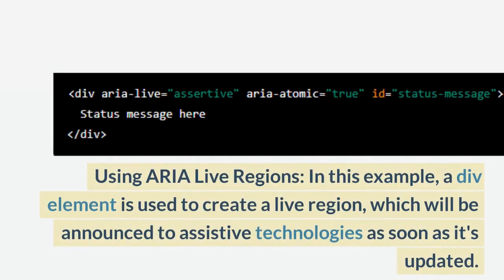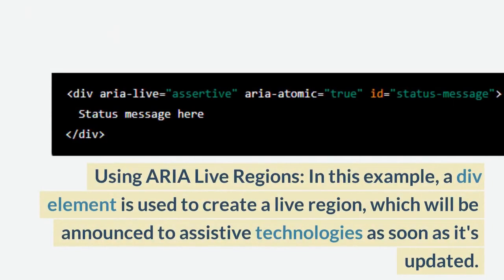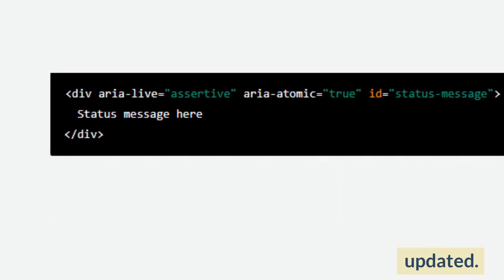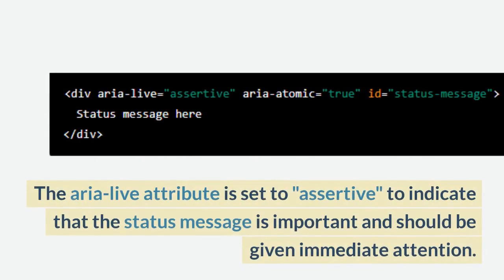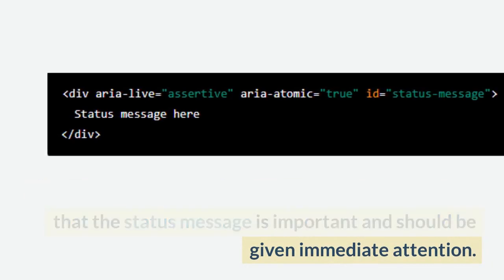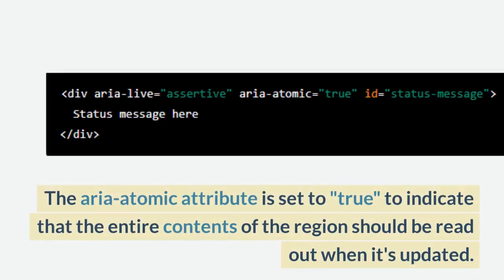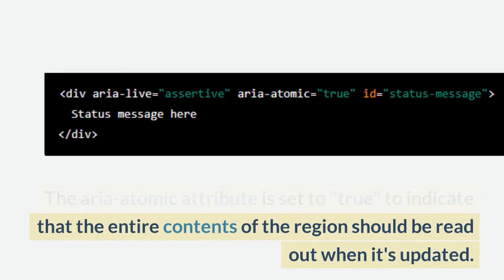Using aria-live regions: in this example, a div element is used to create a live region, which will be announced to assistive technologies as soon as it's updated. The aria-live attribute is set to assertive to indicate that the status message is important and should be given immediate attention. The aria-atomic attribute is set to true to indicate that the entire contents of the region should be read out when it's updated.